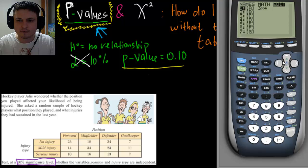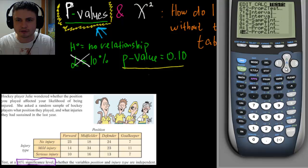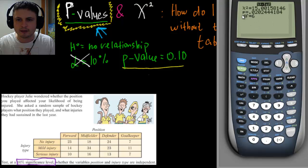And then we're going to click on stat and go to tests and down to chi-square test, which is usually C, and click on enter, calculate, and you get the p-value of 0.02. You don't even have to look at chi squares or DFs here. You're just looking at this number right here.